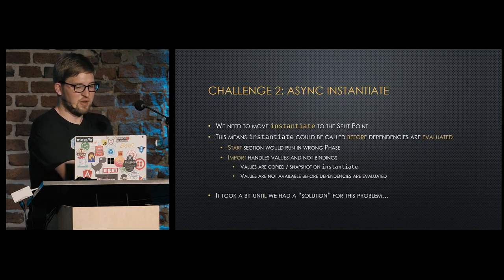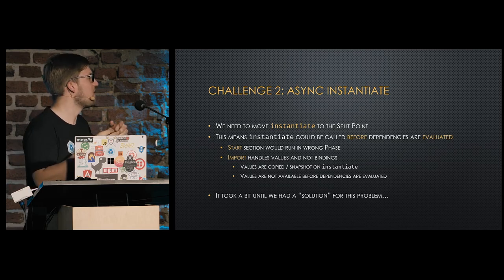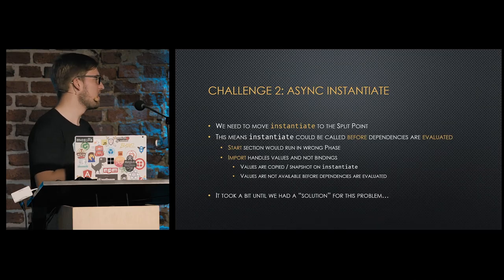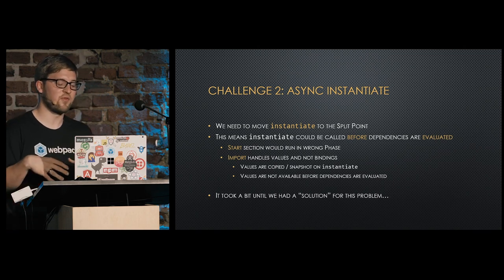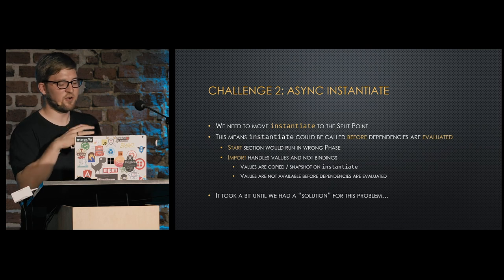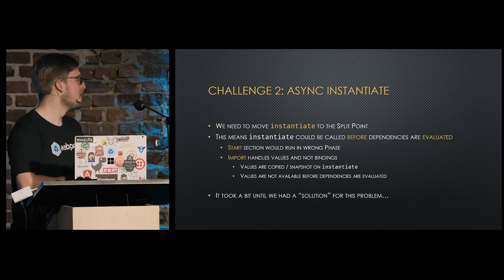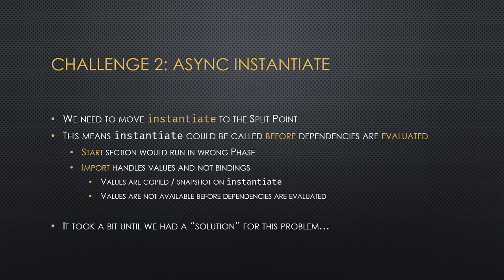The next challenge was implementing this asynchronous instantiation. We need to move instantiate into the split point code and do it asynchronously, but this means we're running instantiate before any dependency is evaluated or even loaded. This could cause two issues: the start section would run at the split point rather than in the evaluation phase, and we can't construct the imports object because dependencies aren't yet available — WebAssembly snapshots values from the imports object when you call instantiate.